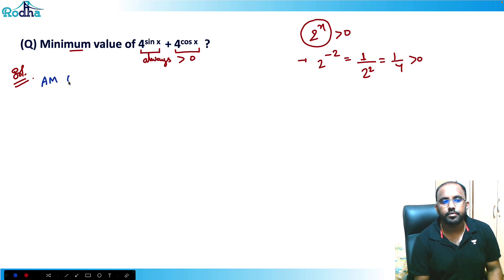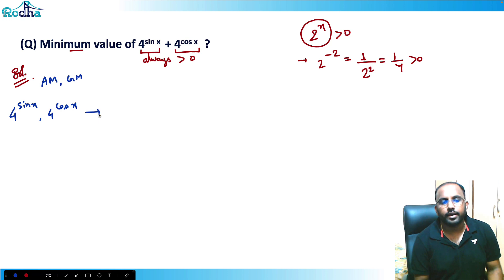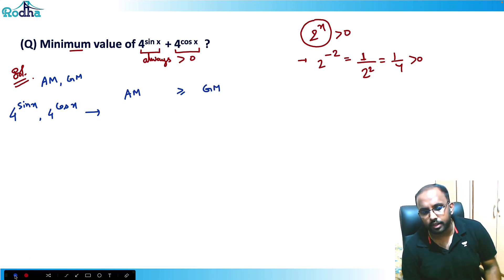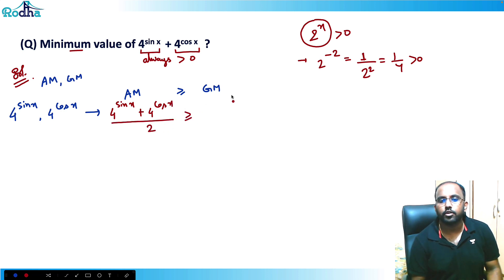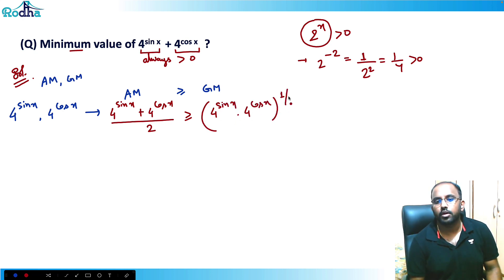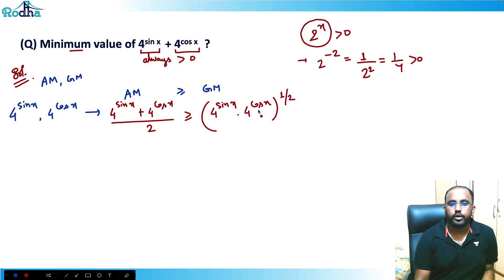Since we need to find the minimum value of two positive quantities, we apply AM-GM. We have two terms: 4^(sin x) and 4^(cos x). Their arithmetic mean divided by 2 is greater than or equal to their geometric mean: [4^(sin x) + 4^(cos x)] / 2 ≥ √(4^(sin x) · 4^(cos x)).